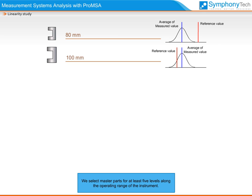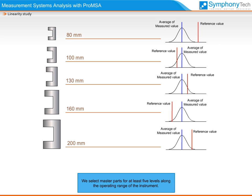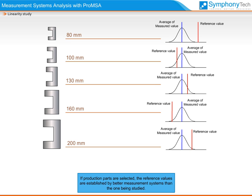We select master parts for at least 5 levels along the operating range of the instrument. We establish the reference values of the parts by traceable standard measures. The references can either be masters or parts selected from our production line. If production parts are selected, the reference values are established by better measurement systems than the one being studied.